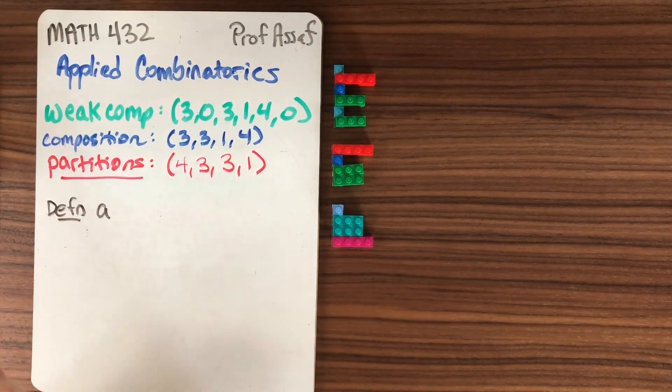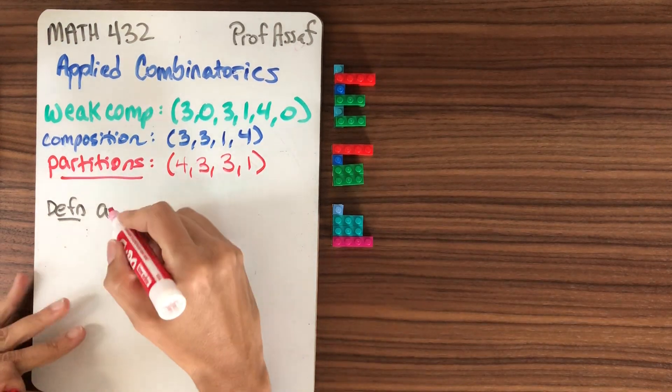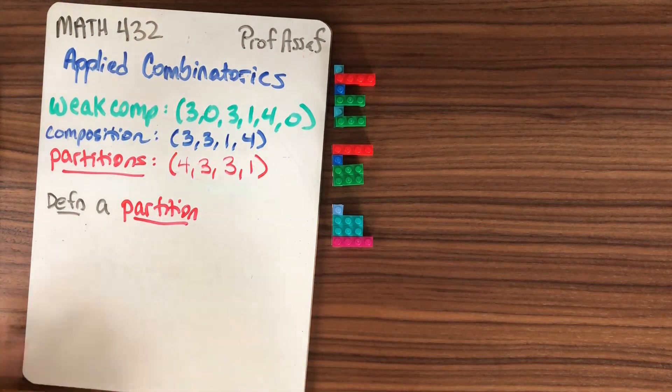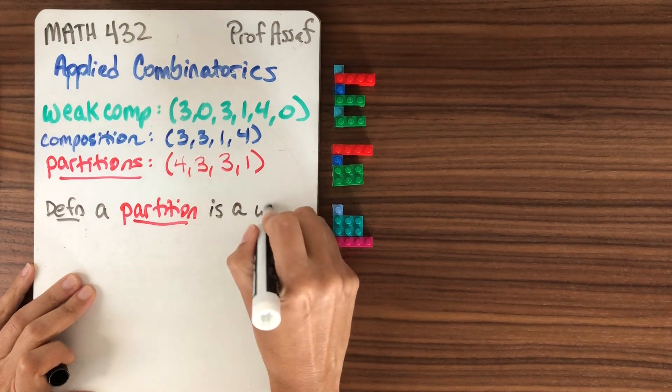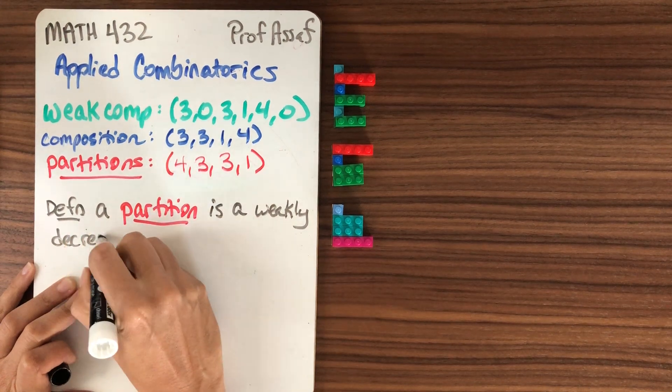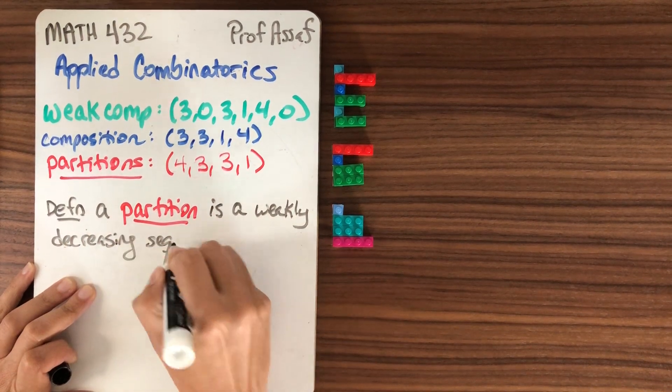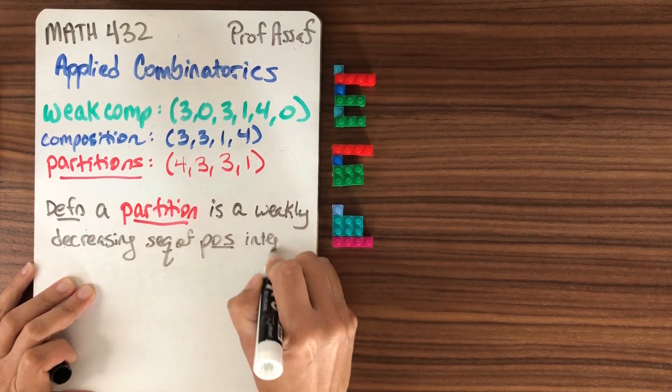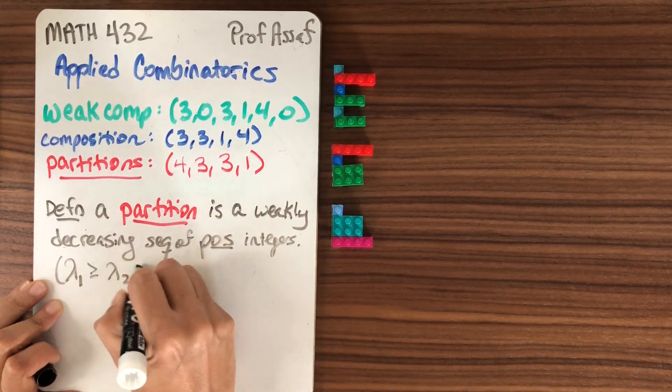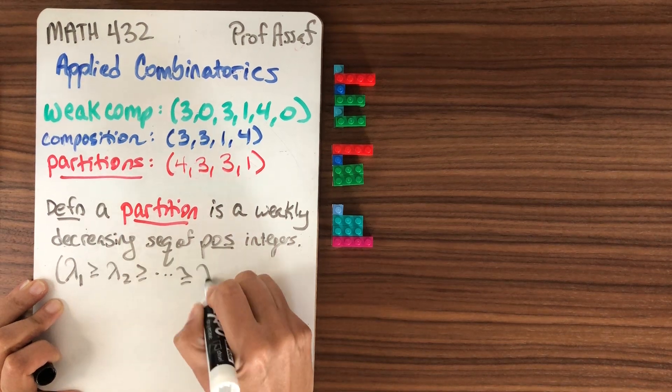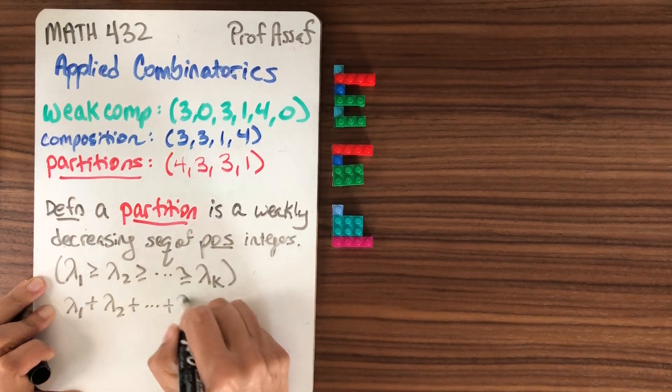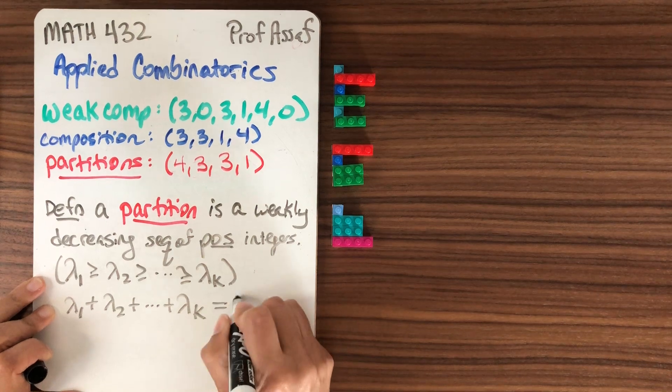So definition. A partition is going to be a weakly decreasing, that means each part is greater than or equal to the next, decreasing sequence of positive integers. So this means that we're going to have lambda 1 greater than or equal to lambda 2, greater than or equal to on and on, greater than or equal to lambda k. And if the parts add up to n, then we say it's a partition of n. So this is what we'll usually call n.